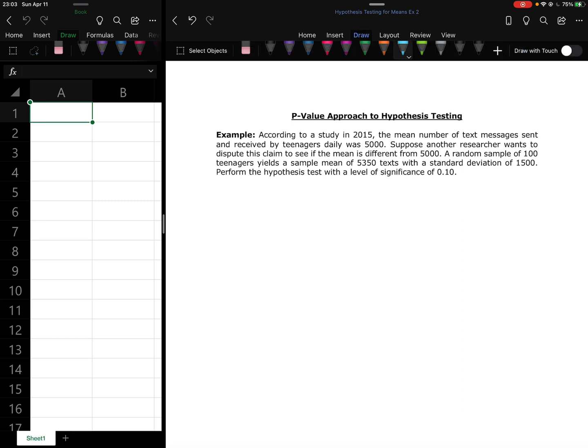So starting off again, I'm going to underline all of the important pieces of information. So in the previous study, the mean number of text messages sent and received was 5000. The researcher wants to see if the mean is actually different from 5000. They took a random sample of 100 teenagers, which yielded a sample mean of 5350 texts. And a standard deviation of 1500. We're doing a hypothesis test at a level of significance of 0.10.